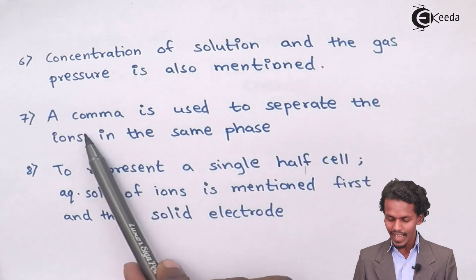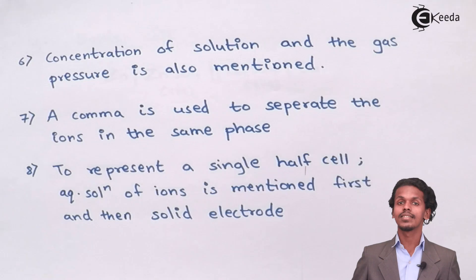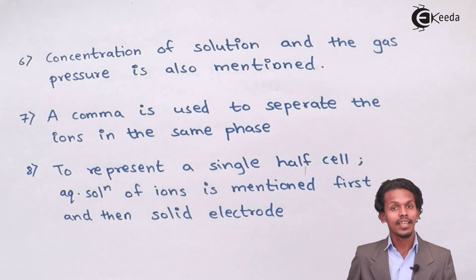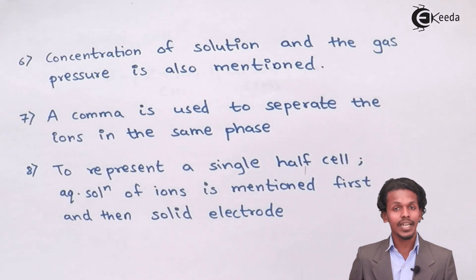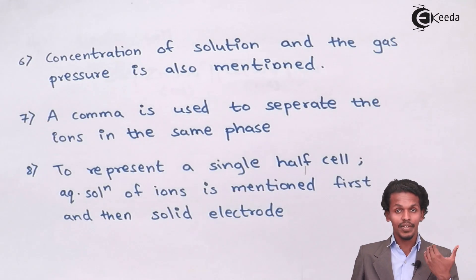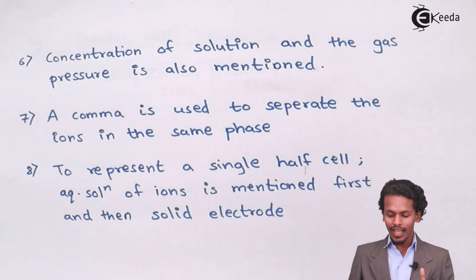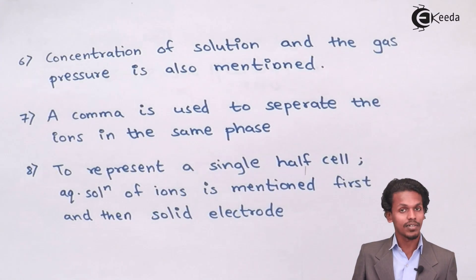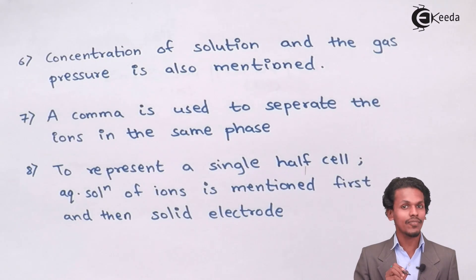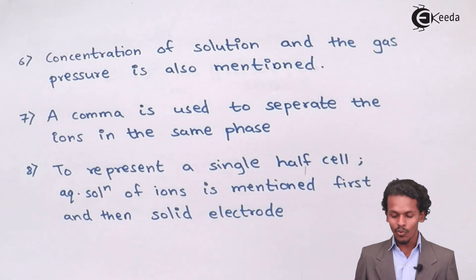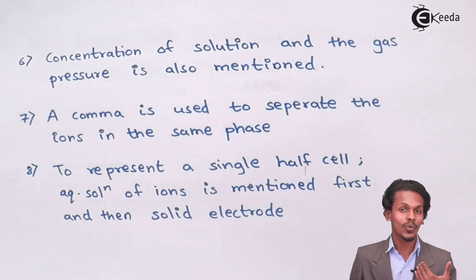A comma is used to separate ions that are in the same phase. For example, if a solution contains both Fe³⁺ ions and Fe²⁺ ions, both are in the aqueous phase but they are different ions of different valency. Therefore, we represent them separated by a comma, written as Fe²⁺, Fe³⁺.